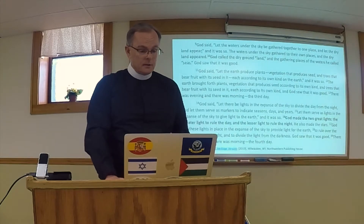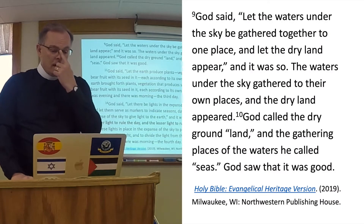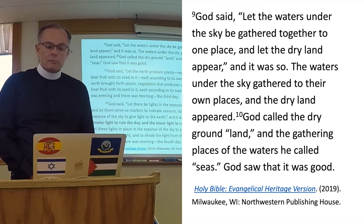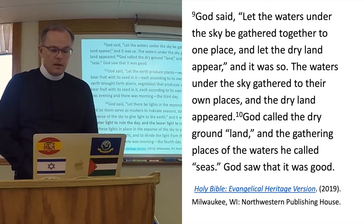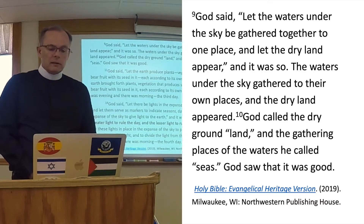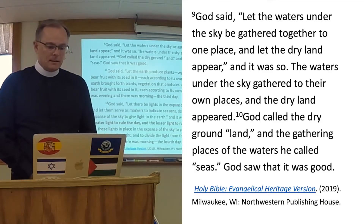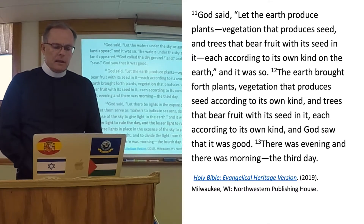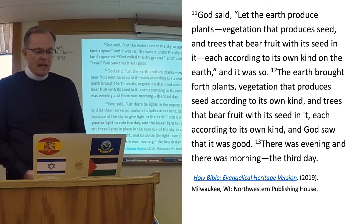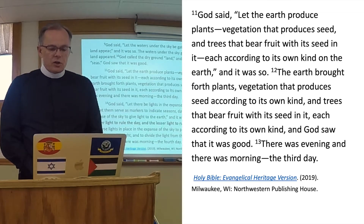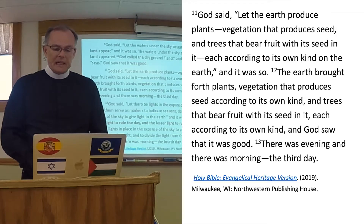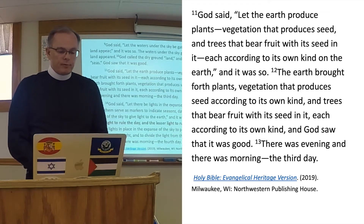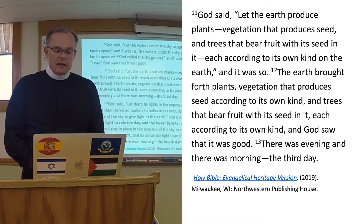Next, we go on to how God created other things. God said, "Let the waters under the sky be gathered together to one place, and let the dry land appear." And it was so. The waters gathered to their own places, and the dry land appeared. God called the dry ground land, and the gathering places of the waters he called seas. God saw that it was good. God said, "Let the earth produce plants, vegetation that produces seed, and trees that bear fruit with its seed in it, each according to its own kind on the earth." And it was so. God saw that it was good. There was evening, and there was morning — the third day.